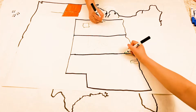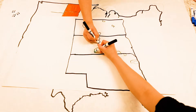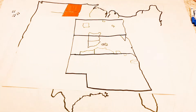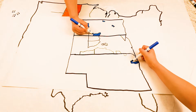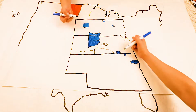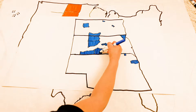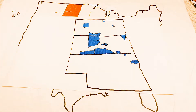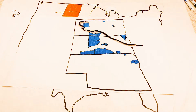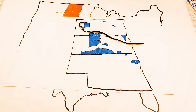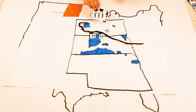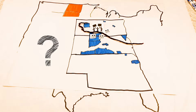Now that we have a visual of the location of DAPL and the location of involved peoples, we are going to focus on a bit of history. The No DAPL protest is mainly protested by American Indian indigenous peoples, affecting many of the surrounding reservations. But what is a reservation?